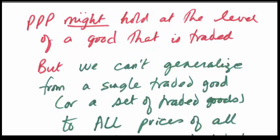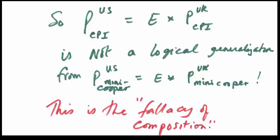So I say that purchase and power parity might hold at the level of a good that is traded but we cannot generalize from a single traded good or a set of traded goods to all prices of all goods in the domestic consumer price index. Here we have it then. You cannot easily compare the US CPI with the British CPI and expect that the ratio of these two CPIs will be the exchange rate. We have kind of a theory but it is certainly not a robust theory because of that fallacy of composition.